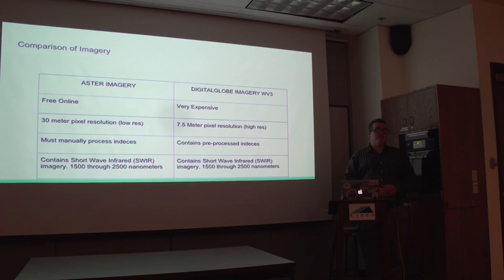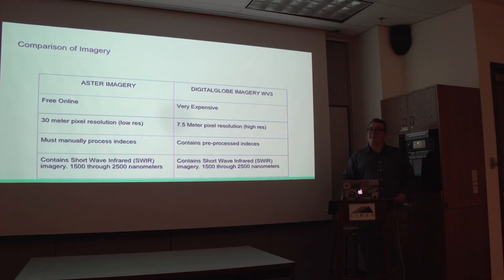Digital Globe is a highly prized asset for all sorts of presentations. If you visit the Digital Globe website, you can see how they've done things such as interdict human trafficking on slave fishing boats, which is incredible given that detailed resolution. With ASTER, you must manually process the spectral indices to ascertain mineral locations, but there are plenty of algorithms available online.